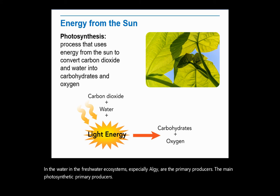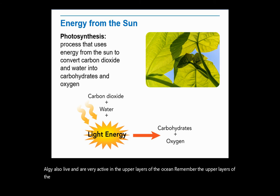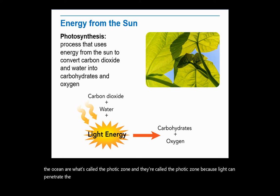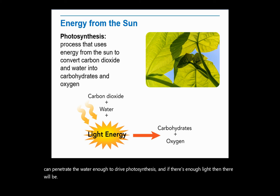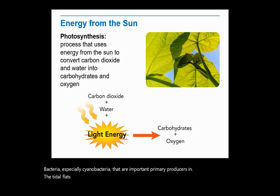Algae also live and are very active in the upper layers of the ocean. The upper layers of the ocean are called the photic zone, because light can penetrate the water enough to drive photosynthesis. If there's enough light, then there will be bacteria — especially cyanobacteria — that are important primary producers in the tidal flats and salt marshes, which are two aquatic ecosystems.